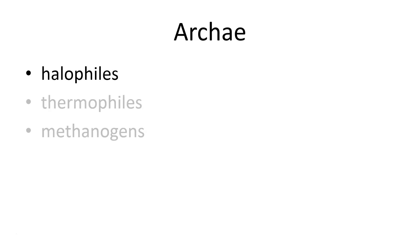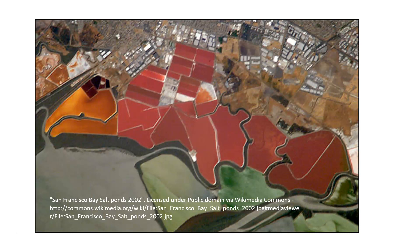The halophiles — 'halo' basically means salt — are organisms that live in extremely salty environments. You would find them in a place like the Dead Sea, or in the Great Salt Lake. What we've got here is a picture of the lower part of the San Francisco Bay, where they have these salt ponds.